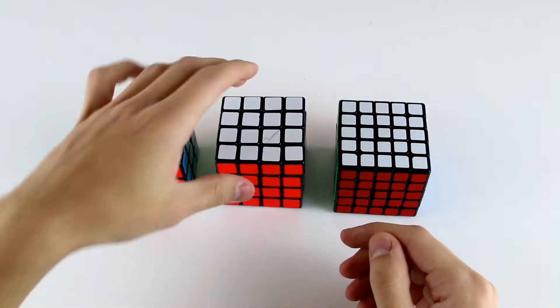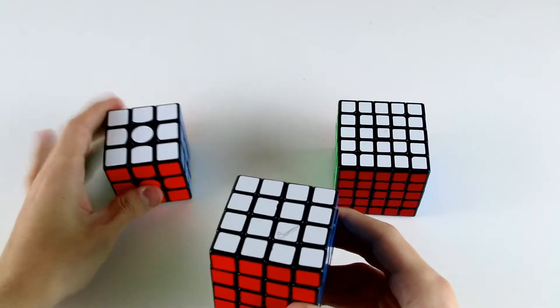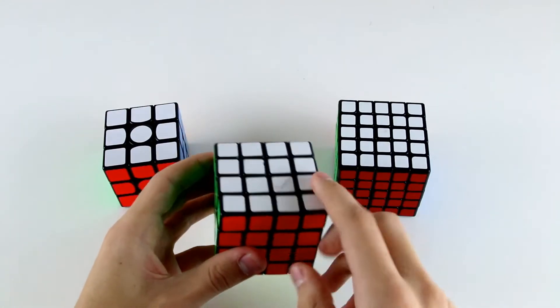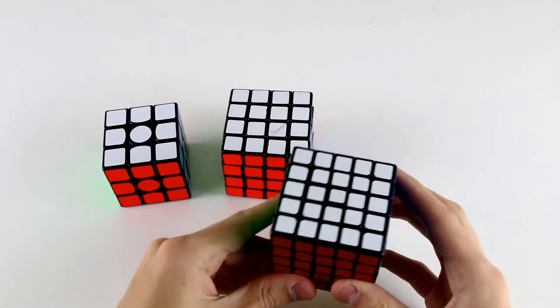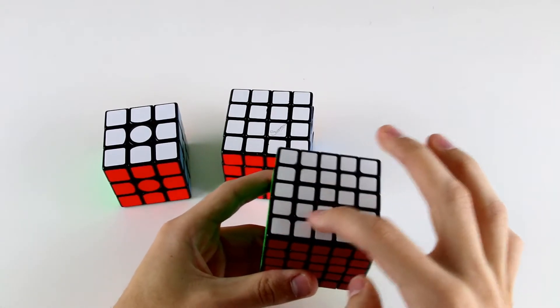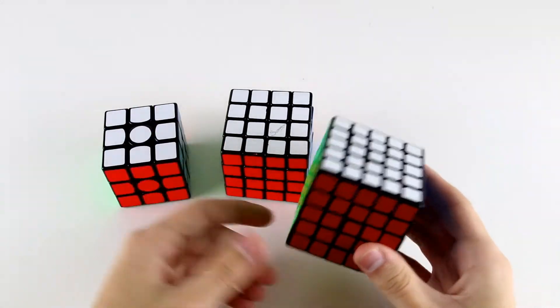As you'll remember from solving a 4x4 cube, we reduce it to a 3x3 state by solving the center pieces and then pairing up our edge pieces. We'll be doing the same thing on a 5x5, solving the center pieces and then pairing up our edges using what's known as the reduction method.